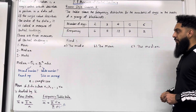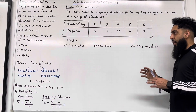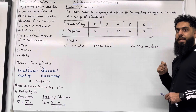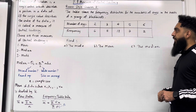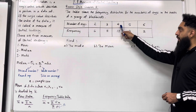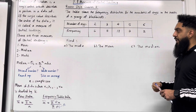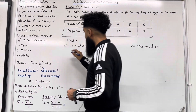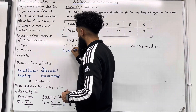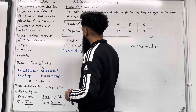Let's start off with the mode. By definition, the mode is the data value with the highest frequency. The data value with the highest frequency is 4 eggs, which has a frequency of 13. So the mode is equal to 4 eggs.